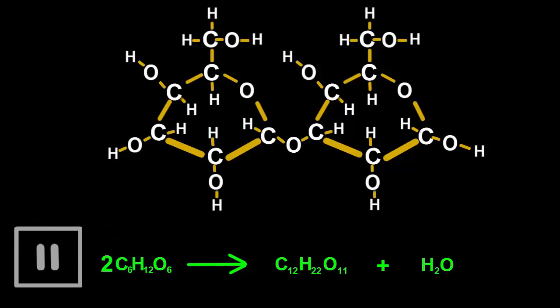Now for the hydrogens. Pause if you want to. On the left hand side there are 24 inside two glucose molecules. On the right hand side there are 22 inside the maltose molecule and two inside the water molecule, a total of 24. They're already balanced.